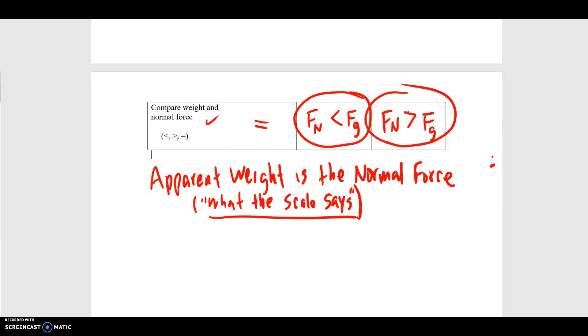Because if there is no scale, it's what the scale would say if it were there. What is the normal force on an object accelerating vertically? Maybe in a rocket ship, in an elevator. There are lots of situations we can think of.